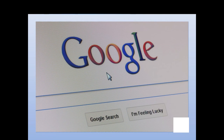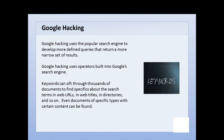The next topic is Google hacking. Google hacking can help us narrow our internet searches down to a manageable number, and can also go after very specific terms and dig those out from thousands of websites. The term comes from using Google itself to develop more defined, refined queries that return a more narrow set of results — instead of 50,000, we might just get 1,000, and they will be more relevant to what we're really after.